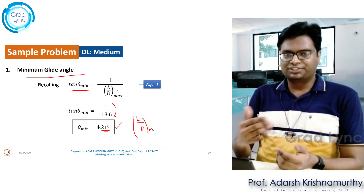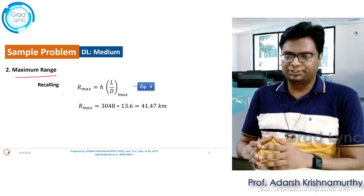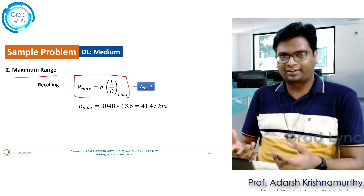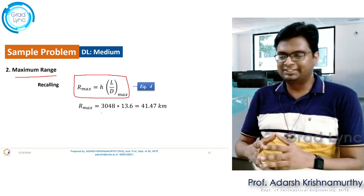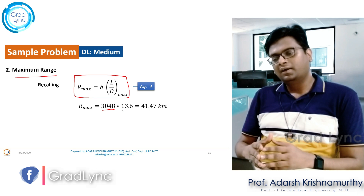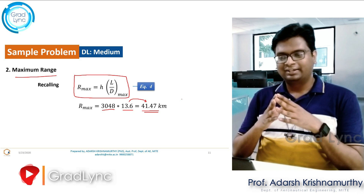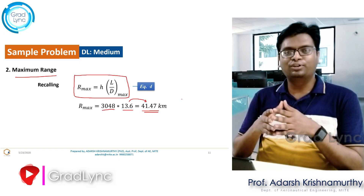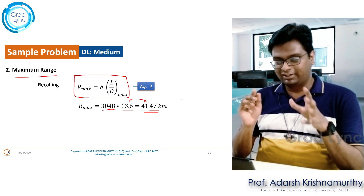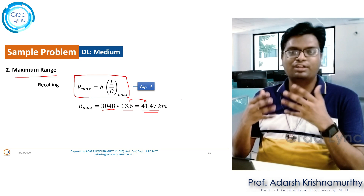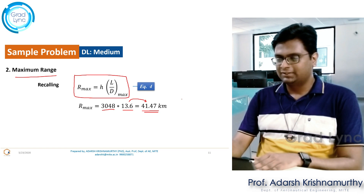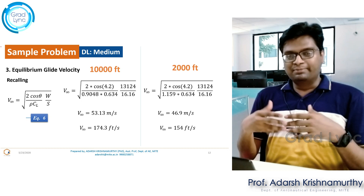Second parameter: maximum range. Using R_max = H × (L/D max), with H = 10,000 feet converted to meters, and L/D max = 13.6, the maximum range the aircraft can cover with engines off while flying at minimum glide angle is 41.47 km. So even with both engines off, the aircraft can glide over 41 km.